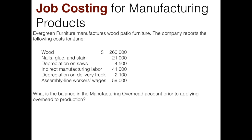Assembly line workers wages — that's a large cost, and that's probably direct labor, so it would not be included as part of overhead. Now we need to draw our overhead T-account, recalling that the left side (debit side) holds actual overhead, which is what we're computing here, and the right side (credit side) holds the applied or allocated overhead, which we'll discuss later.